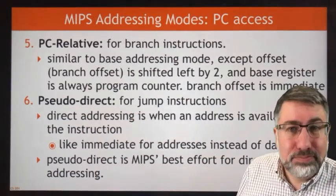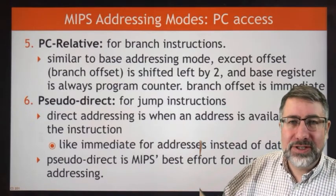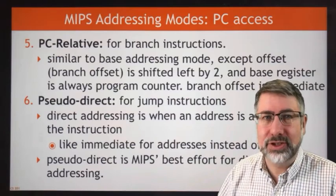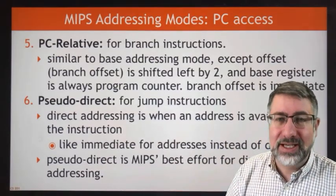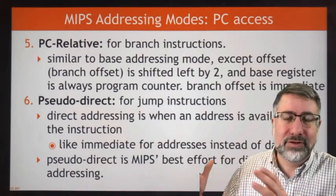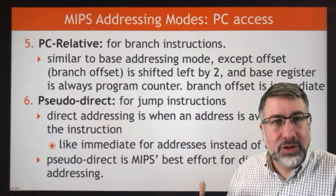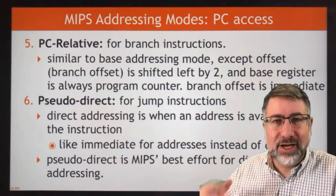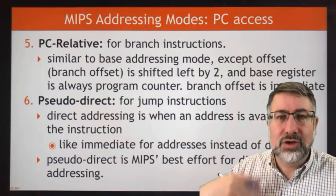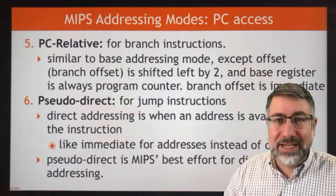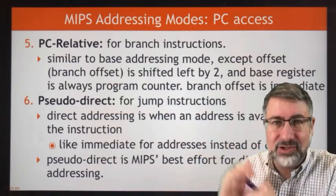The fifth kind is called PC-relative, or program counter relative. This is the kind of addressing used for branch instructions. It means the information we're interested in is relative to the program counter rather than some address in a register. It's similar to base-plus-offset addressing, except instead of adding the offset to a register in the register file, we add that offset to the program counter to get the new program counter value.